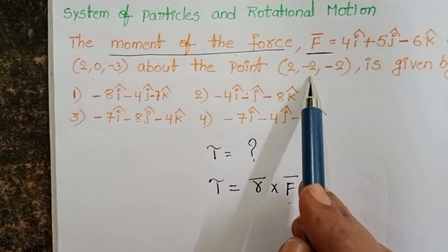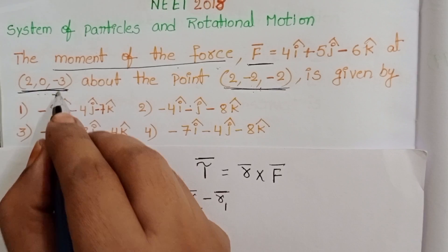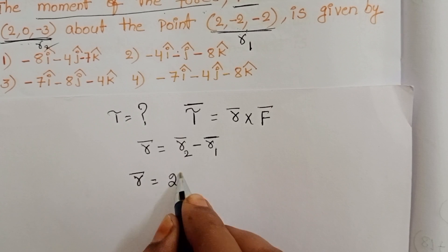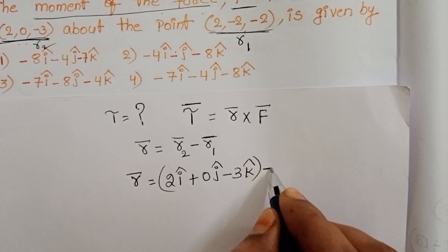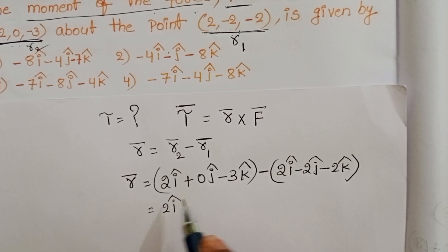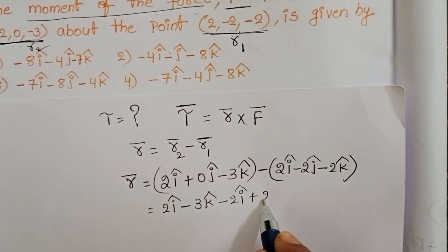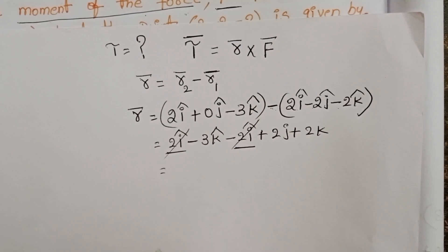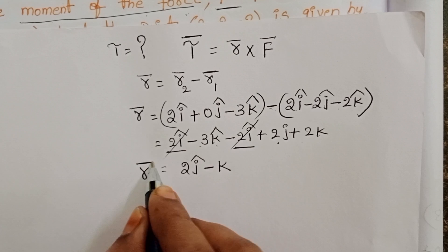So this is the final position and this is the initial position. By using these two points, first find out the position vector. Position vector R̄ = R2 - R1. In vector form: R̄ = (2i + 0j - 3k) - (2i - 2j - 2k). The i components cancel to 0i, giving 0i + 2j - k. So the position vector is 0i + 2j - k.